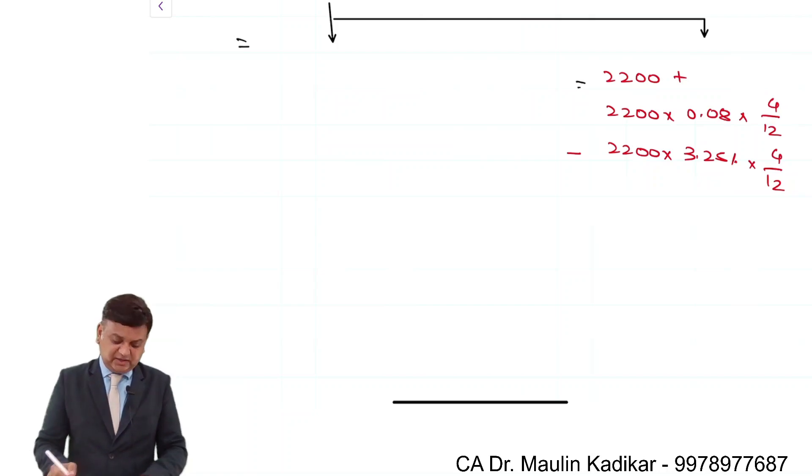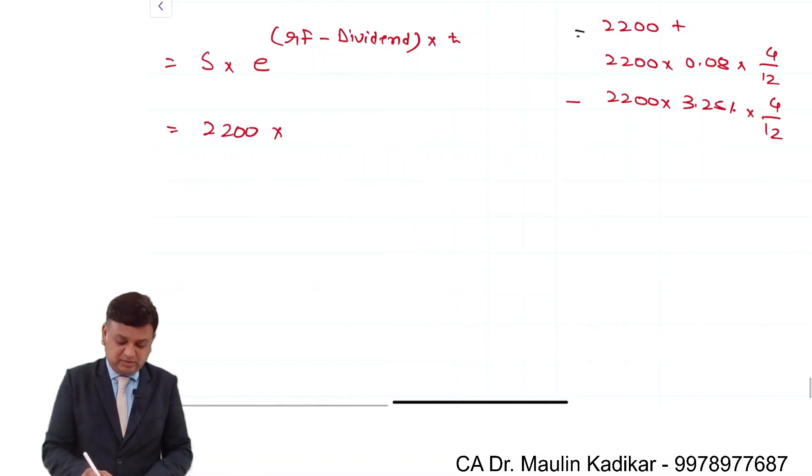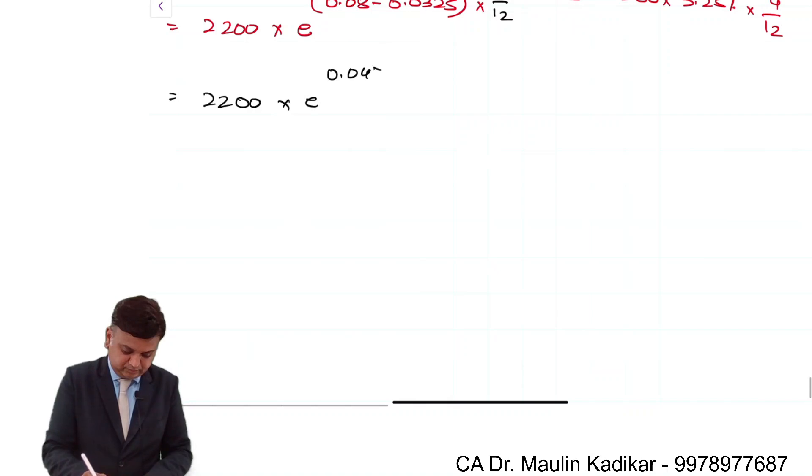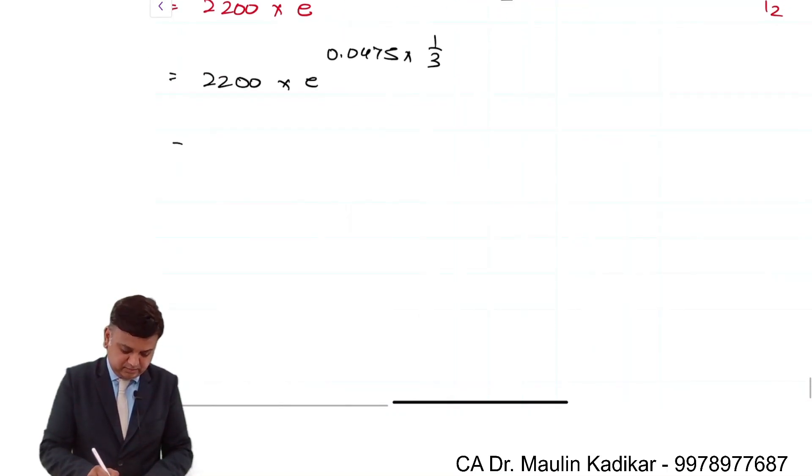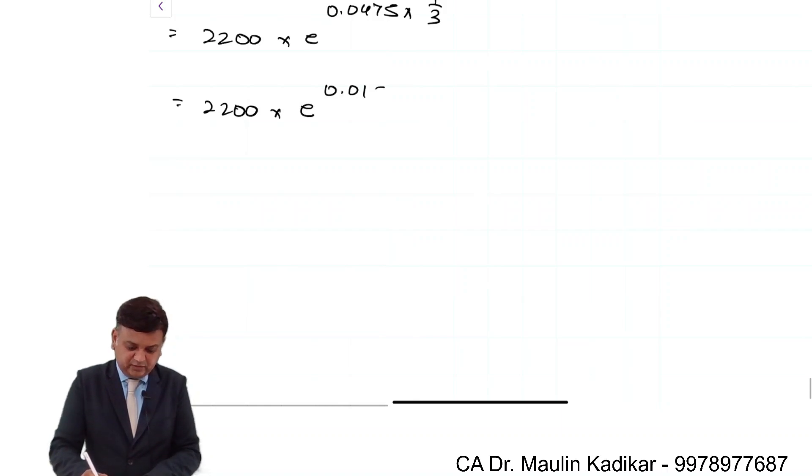But since the E factor information is given, we have to modify it slightly. The formula becomes 2,200 × e^((0.08 - 0.0325) × time period). So (0.08 - 0.0325) equals 0.0475, and 0.0475 × 1/3 gives us the exponent 0.01583.